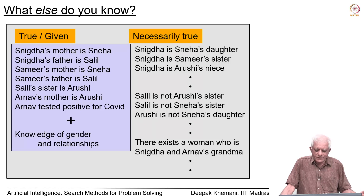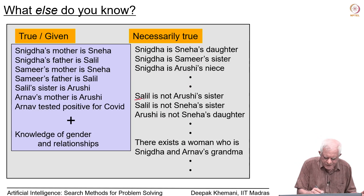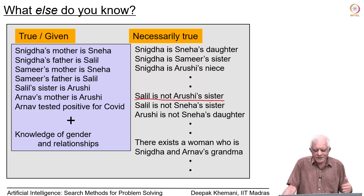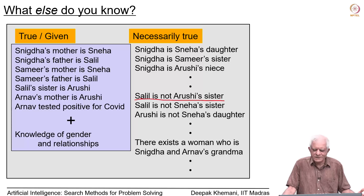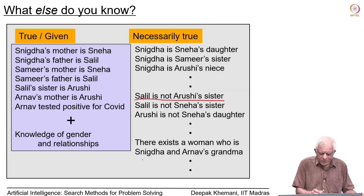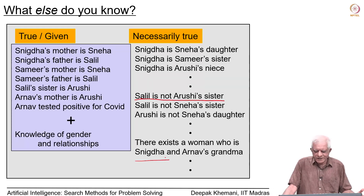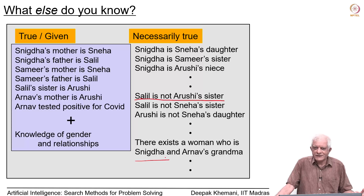Adding a topical fact — Arnav has tested positive for COVID — we can derive further conclusions. For example, Salil is not Arushi's sister, because Salil is male. We can also conclude that there exists a woman who is Snigdha and Arnav's grandmother, because if two people have parents who are siblings, they must share a common grandmother. These kinds of inferences are called deductive inferences because they are necessarily true.